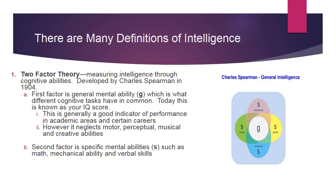Before we get into how we learn, we're going to talk about how we define intelligence. We'll start with the two-factor theory, which measures intelligence through our cognitive abilities. This was developed by Charles Spearman in 1904. The first factor is general mental ability, otherwise known as G, which is what different cognitive tasks have in common. Today, this is known as your IQ score.